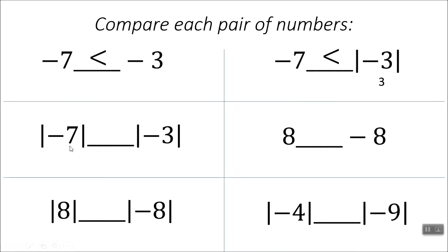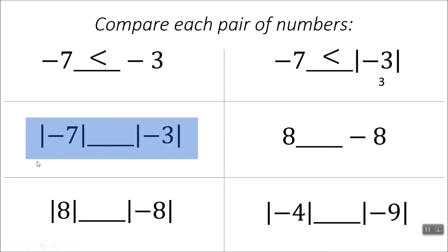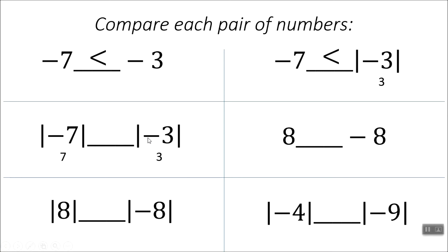Now in this problem we have the same numbers as the very first one, but now we've got absolute value bars around both of them. So you find out how far they both are from 0. Negative 7 is 7 away; negative 3 is 3 away from 0. 7 is larger than 3, so I want to eat the 7. The absolute value of negative 7 is greater than the absolute value of negative 3.